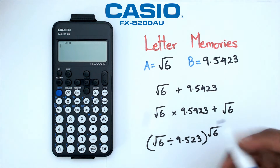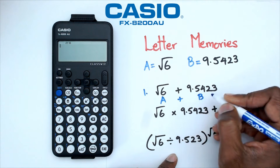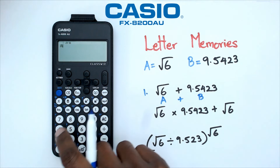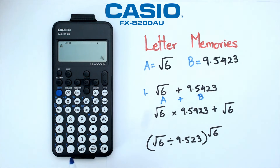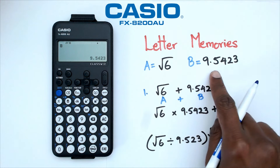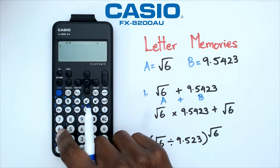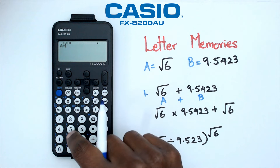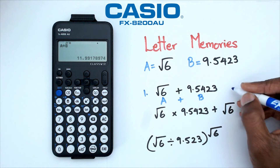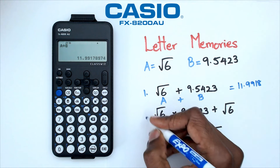Now let's look at question one: A plus B. Going back into the calculator, if I click Shift four — which happens to be A — that gives me square root of six. If I click Shift five, that's the letter B, giving me nine point five four two three. So for question one I just go Shift four plus Shift five, and that gives me A plus B which equals eleven point nine nine one eight.